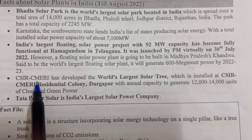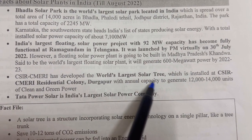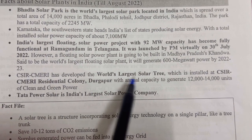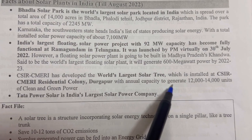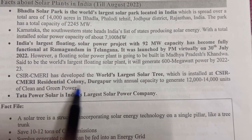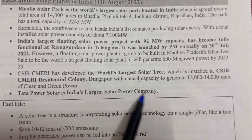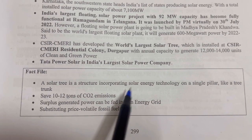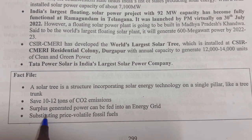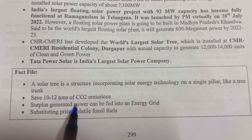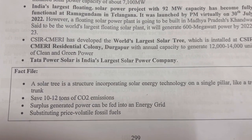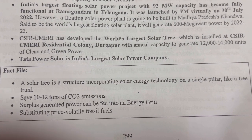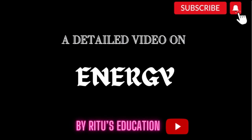CSIR-CMERI developed the world's largest solar tree, installed at CSIR-CMERI residential colony in Durgapur, with annual capacity to generate 12,000 to 14,000 units of clean and green power. Tata Power Solar is India's largest solar power company. A solar tree is a structure incorporating solar energy technology in a single pillar like a tree trunk, saving about 10-12 tons of carbon dioxide emissions. Surplus generated power can be fed into the energy grid, substituting volatile fossil fuels.